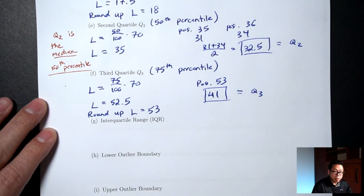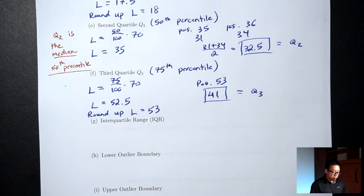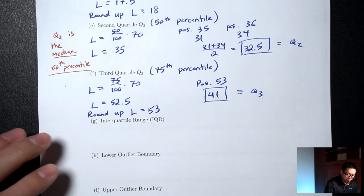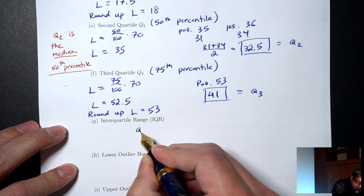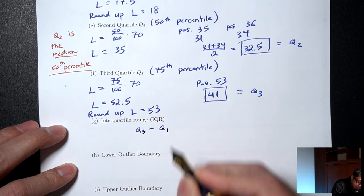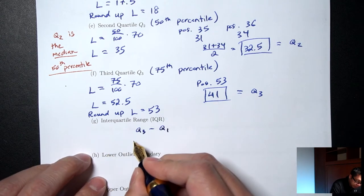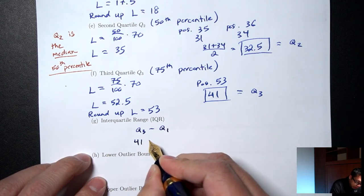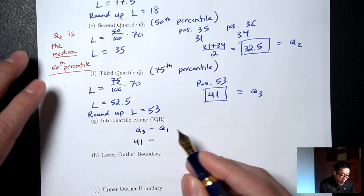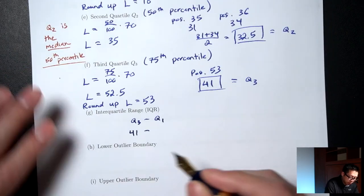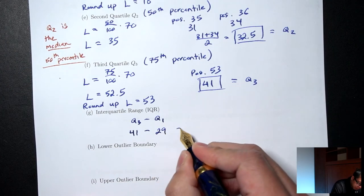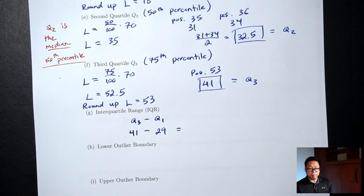The next thing to compute is the interquartile range, or IQR. The IQR is Q3 minus Q1. In our case, Q3 is 41 and Q1 is 29, so 41 minus 29 equals 12. The IQR is 12.